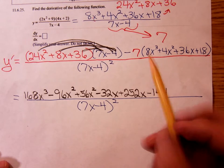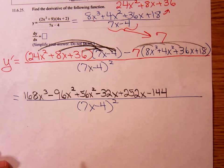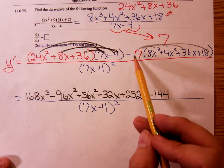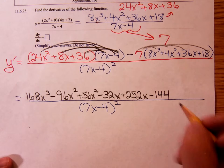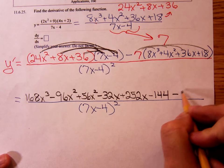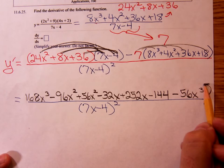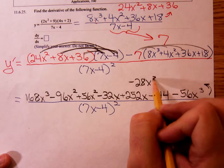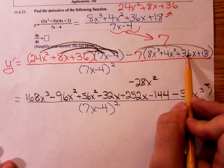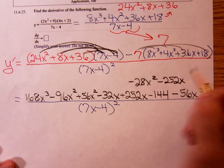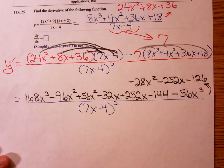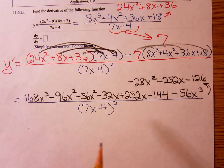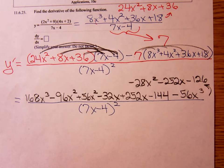I have to distribute the 7 over all of that stuff. Okay, so distributing that minus 7 over the 8x cubed plus 4x squared plus 36x plus 18, I get... I'll get it started. That's a negative 56x cubed. Minus 28x squared. I agree. I agree. Minus 252x. Minus a 252x. Okay, I agree. And minus 126. Minus 126. Very rarely will you ever want to expand that denominator when you're using the quotient rule. We'll just leave that 7x minus 4 quantity squared as it is.